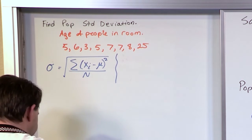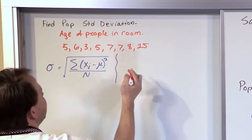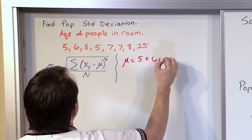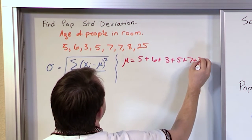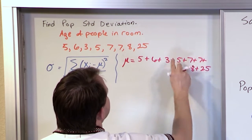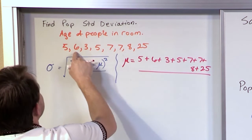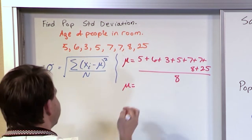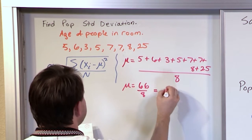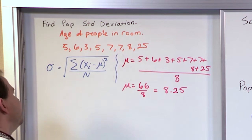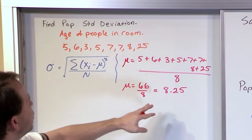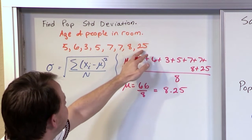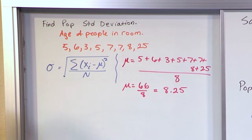The first thing we want to do is find the actual population mean. We add everything together: 5 plus 6 plus 3 plus 5 plus 7 plus 7 plus 8 plus 25, and divide by 8. What we get is 66 on top and 8 on the bottom, so we get 8.25. You have lots of data points below 8, but this 25 here kind of pushes the average value up a little bit, and that's why it works out that way.